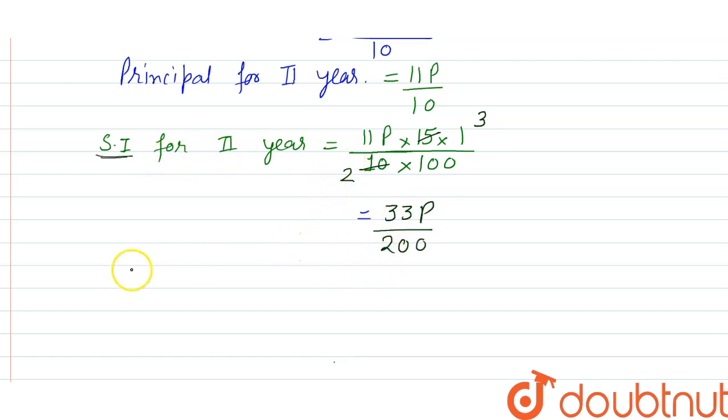And according to question, interest for second year is given as 4,950. So let's equate these two interests. Now calculate for P.